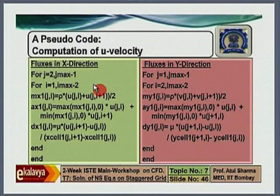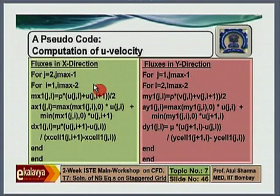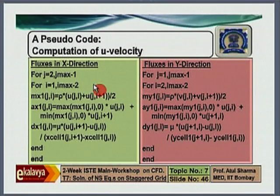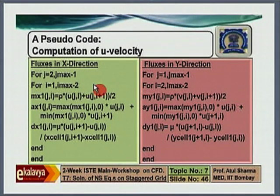I will show you pseudo code with proper looping. I am showing you the main part of the code — the main loops which are involved — not the complete pseudo code. You have to use a particular programming language and convert it as per the language syntax. This pseudo code is for when you apply the x momentum equation to obtain u velocity. In this slide I am showing you steps to predict u velocity. This is the expression to calculate the mass fluxes in the x direction and in the y direction.